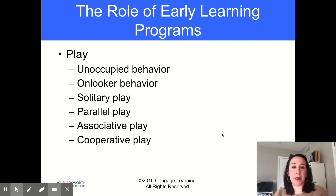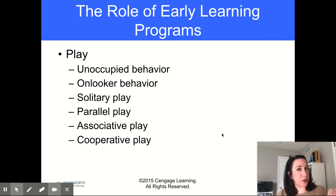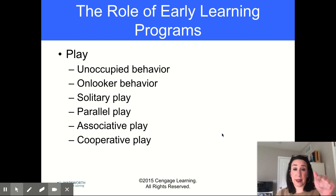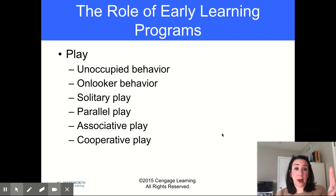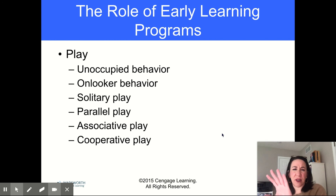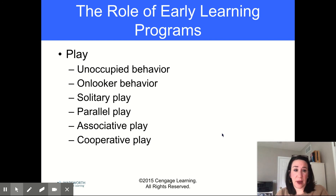When there are conflicts in cooperative play, it's usually because one child doesn't understand the rules yet. A lot of times you'll have a group of kids where one child knows exactly how everyone is supposed to be playing, and if you're not playing that way, that causes conflict. Or the child who doesn't understand how everyone is playing together will get upset because they don't understand what's happening.